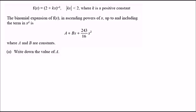New problem: we're given the function (2 plus kx) to the power negative 3, a binomial expansion where the absolute value of kx is less than 2 and k is positive. The expansion in ascending powers of x up to and including x squared is given with constants a and b. Let's find the value of a.